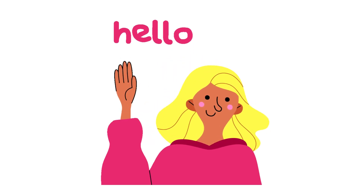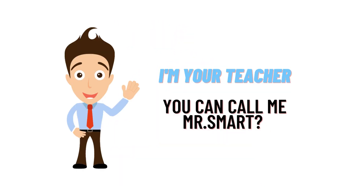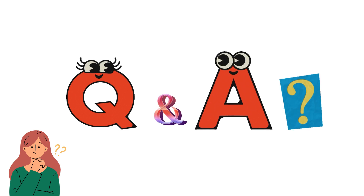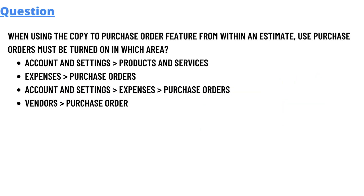Hello everyone, my name is Mr. Smart and I am your teacher. I will be teaching you different questions and answers in this question and answers series by Class Theta. Our today's question which we will be discussing is: when using the copy of purchase order feature from within an estimate, 'use purchase order' must be turned on in which area?